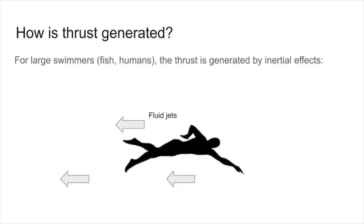How is this thrust force generated? For large-scale swimmers, such as fish, aquatic mammals, or humans, thrust is generated by inertial effects. That is to say, when the motion of the limb forces liquid to accelerate behind it, as depicted by the fluid jets moving back and to the left in this image, the displaced fluid will exert a force of equal magnitude and opposite direction onto the body. This results as thrust and the swimmer is propelled forward.